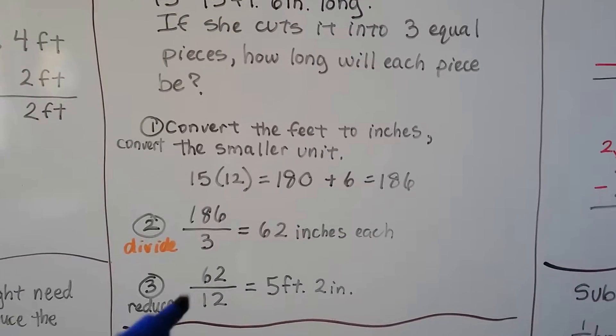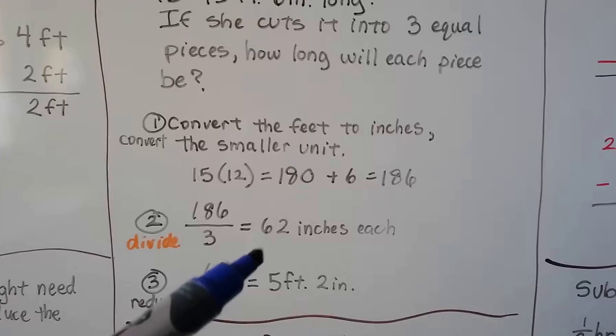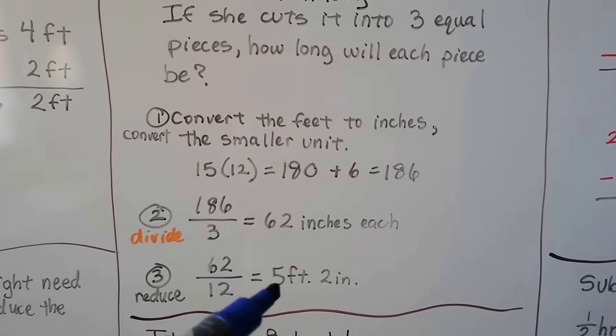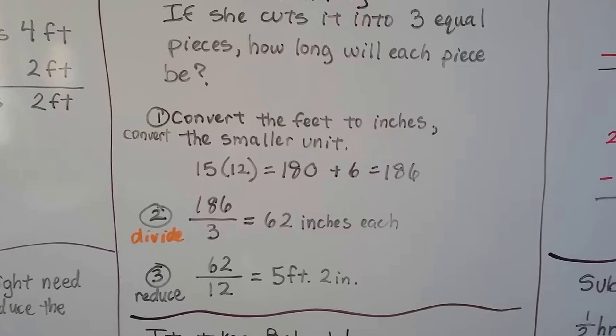Now we can split the 186 inches into 3 equal parts and it will come out to 62 inches each. We could change that back to feet by dividing it by 12 because there's 12 inches in a foot. And how many 12s are in here? We would get 5 feet 2 inches.